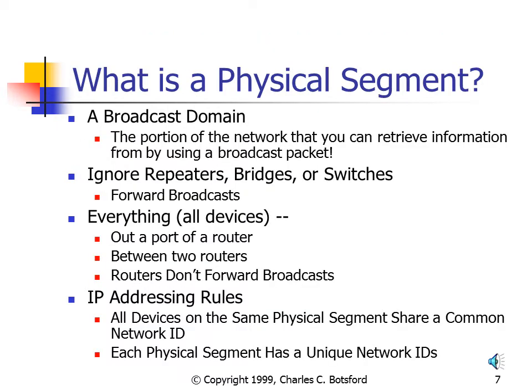One key piece of terminology we must be familiar with is: what is a physical segment? A physical segment can be thought of as a broadcast domain — a portion of the network where all devices can exchange information using a broadcast packet. If two devices are separated by a repeater, a bridge, or a switch, they are in the same broadcast domain because these devices will forward broadcasts. However, a router will not forward broadcasts, and routers define our physical segments.